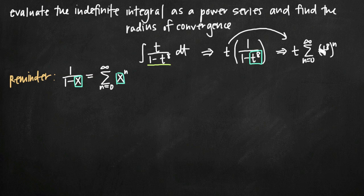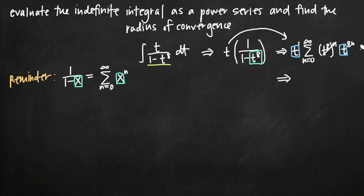Now we just need to simplify. We have t to the first power out front, and t to the 8th raised to the n power becomes t to the 8n, because when you have an exponent raised to another exponent you multiply them. Now we have two terms multiplied together with like bases — t to the first and t to the 8n — so we add the exponents. Our power series representation becomes the sum from n equals 0 to infinity of t to the 8n plus 1.